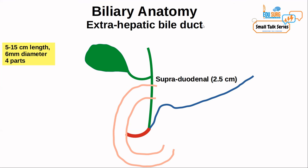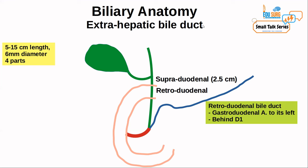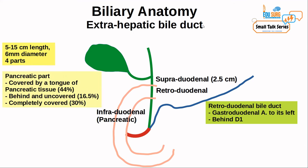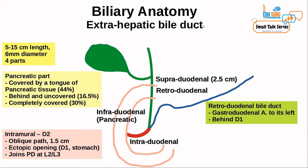The supraduodenal part is 2.5 centimeters in length. In the retroduodenal part, this segment is behind D1 and the gastroduodenal artery is to its left — making it a good landmark to identify the gastroduodenal artery. For the infraduodenal part, behind or within the pancreas, it can be covered by a tongue of pancreatic tissue in 44% of cases, uncovered behind the pancreas in 16.5% of cases, and completely intrapancreatic in 30% of cases.